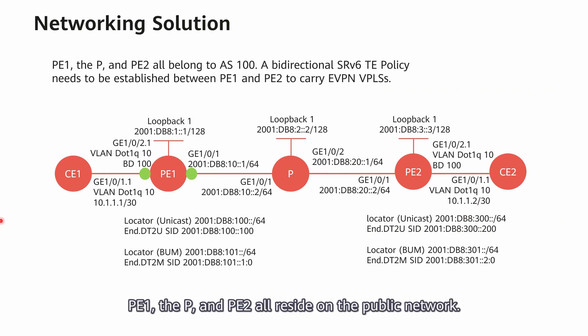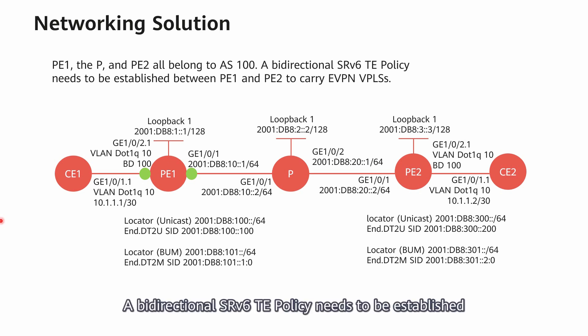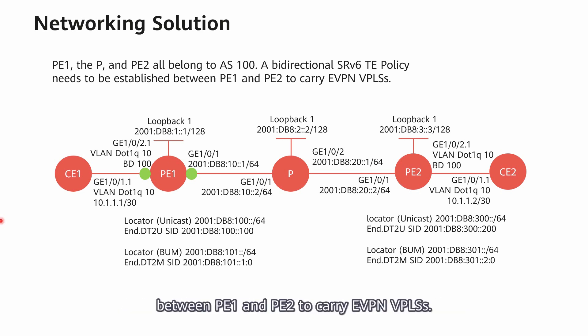Let's take an example of five devices to describe the detailed configuration and verification processes in this scenario. PE1, the P, and PE2 all reside on the public network. CE1 and CE2 are connected to customer networks. A bidirectional SRv6 TE policy needs to be established between PE1 and PE2 to carry EVPN VPLS.